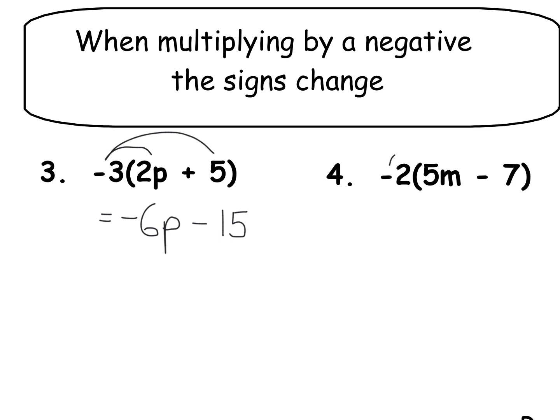And the last one, we're multiplying everything by negative 2. So this gives us negative 10m. And a negative times a negative turns into a positive. 2 times 7 is 14.